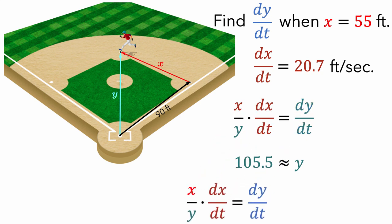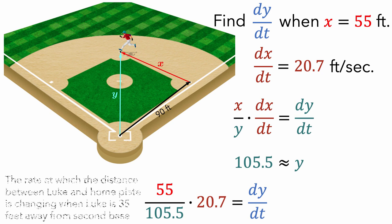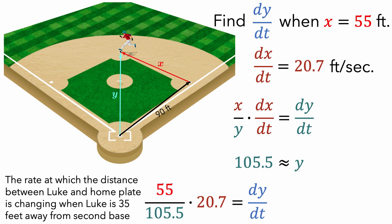Let's put this all together. We were given that dx/dt is 20.7 feet per second. And we want to do the computation when x is 55 feet. And we figured out that when x is 55 feet, then y is approximately 105.5 feet. So now we can compute the value for dy/dt, which is the rate at which the distance between Luke and home plate is changing when Luke is 35 feet away from second base, as approximately 10.8 feet per second.